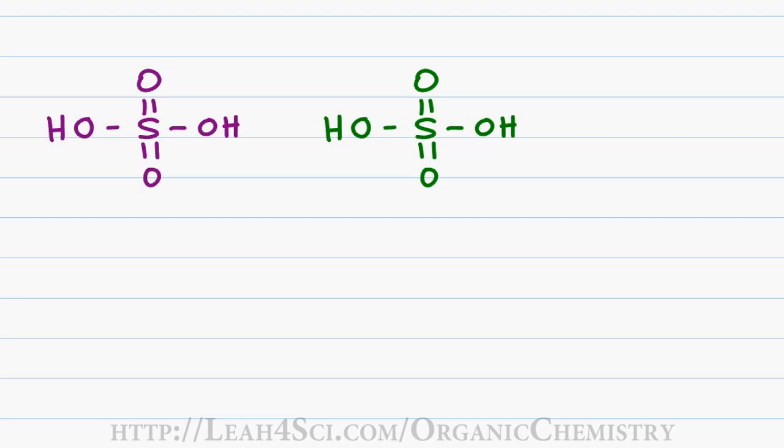One of the sulfuric acid molecules will use a lone pair on its oxygen to reach out and grab an acidic hydrogen from the next sulfuric acid molecule. When it does so, the bond between hydrogen and oxygen collapses onto that other oxygen.